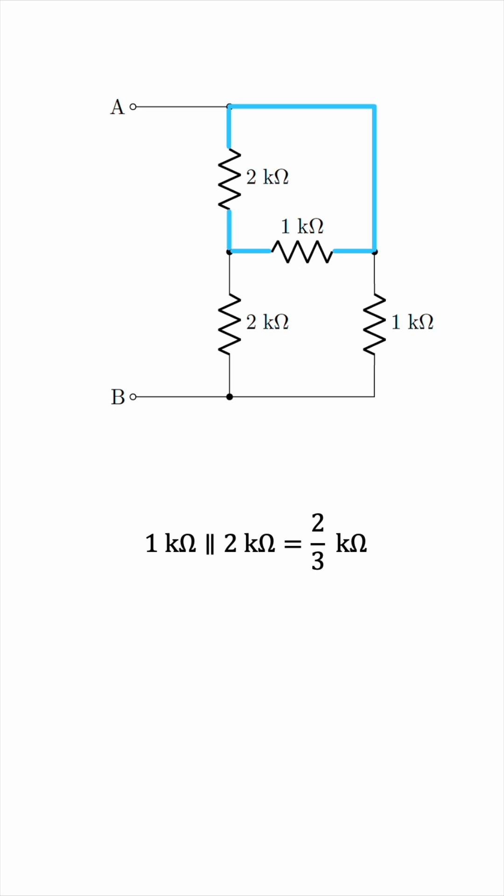So, basically, like this. You can remove the 2kΩ resistor and replace the 1kΩ resistor with 2 thirds and you'll get exactly the same thing.